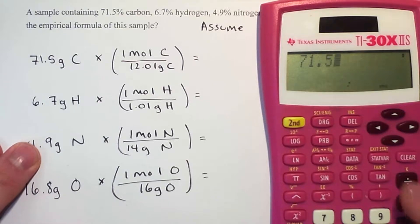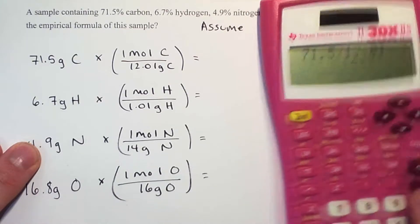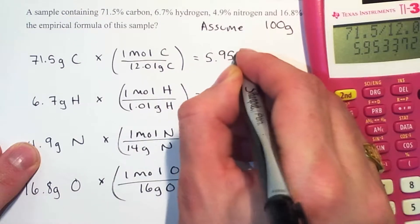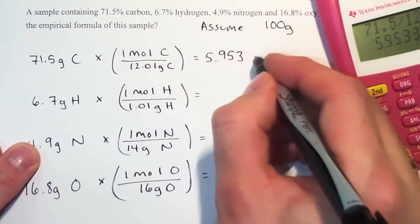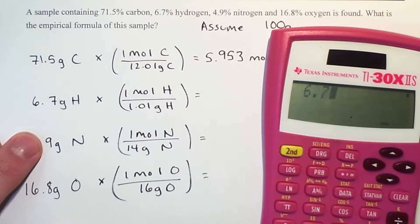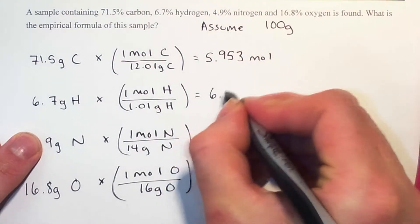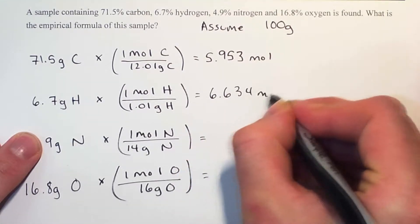71.5 divided by 12.01 is 5.953 moles. 6.7 divided by 1.01 is 6.634 moles.